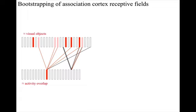So the bias on connectivity means that the set of columns in the discriminates activity overlap area that are activated in response to two similar populations active at the same time in the visual objects area will be different from the set activated in response to two quite different populations.